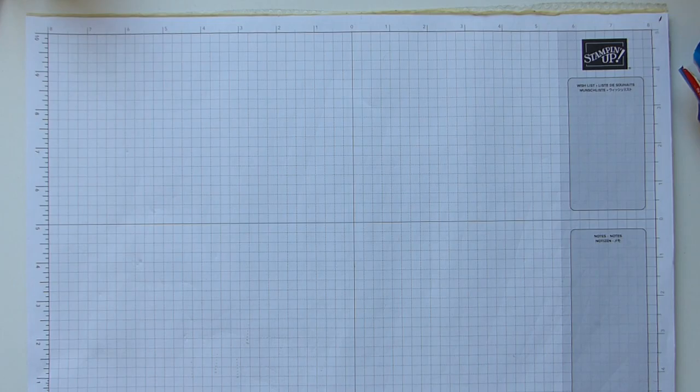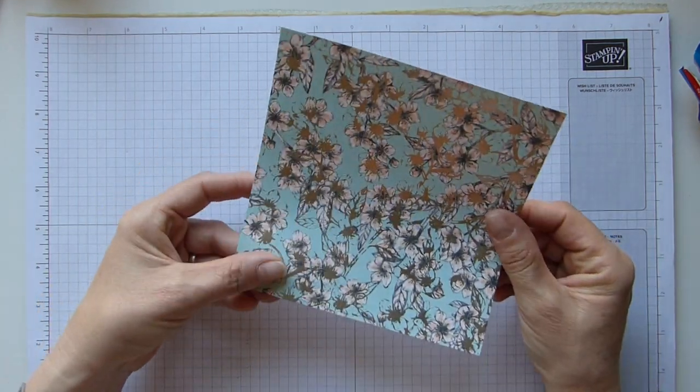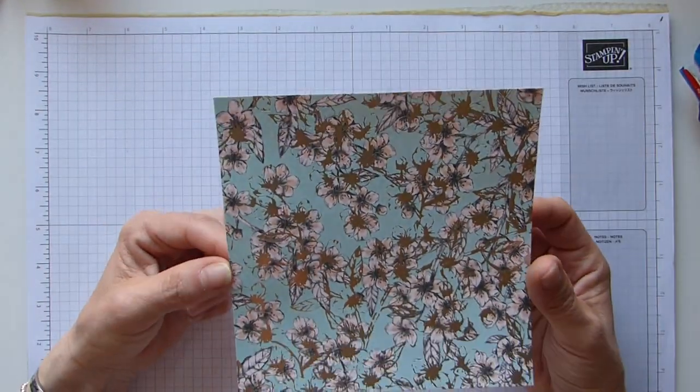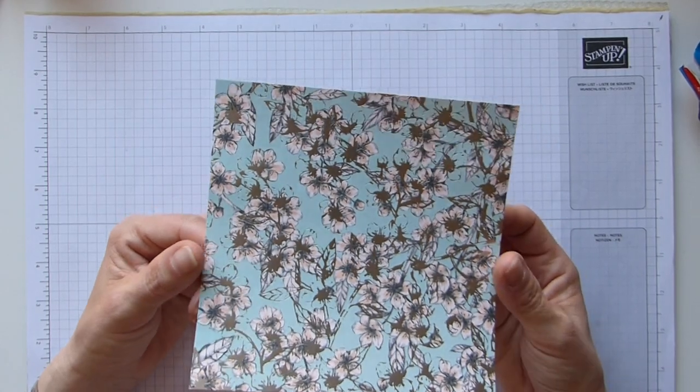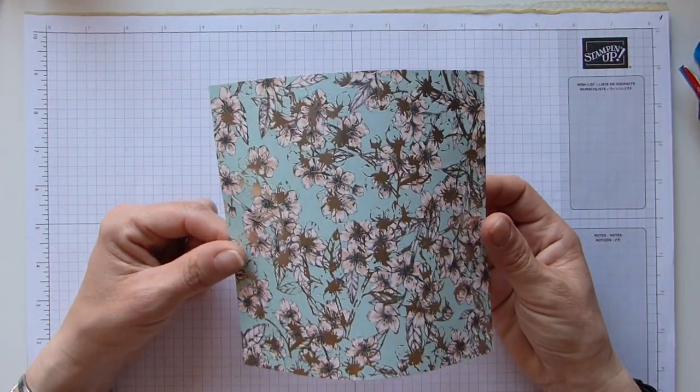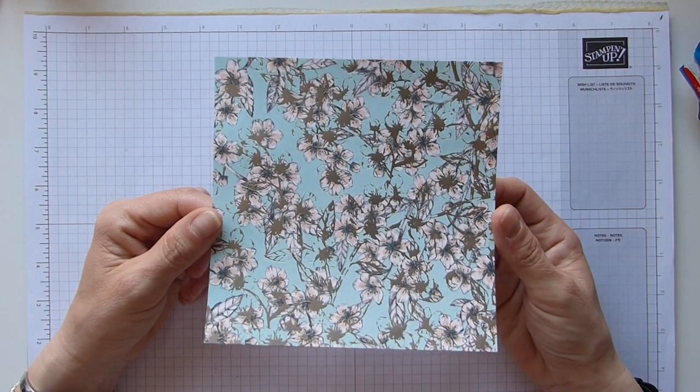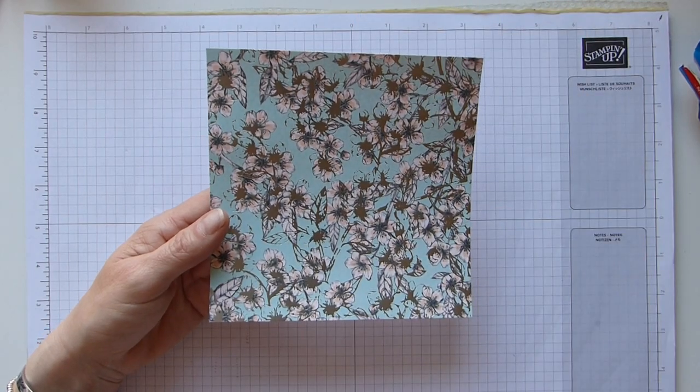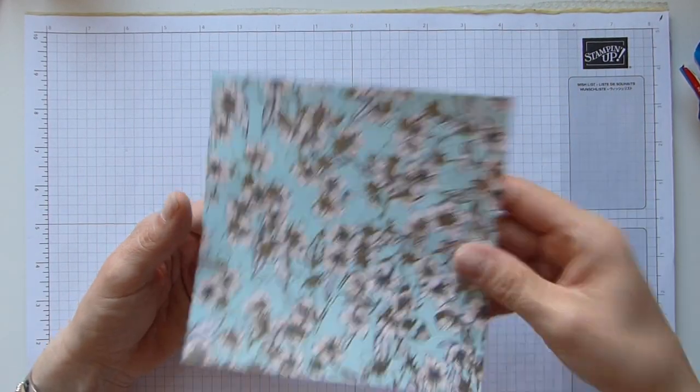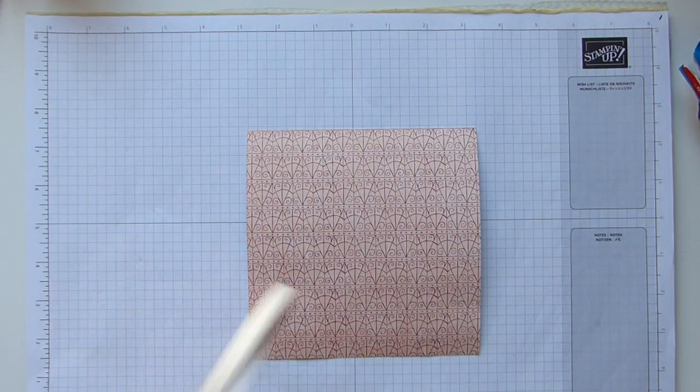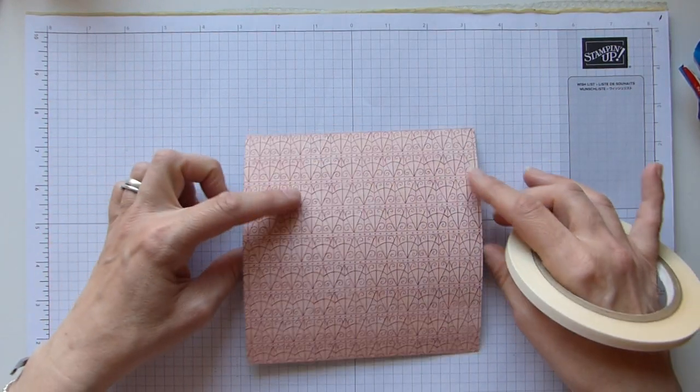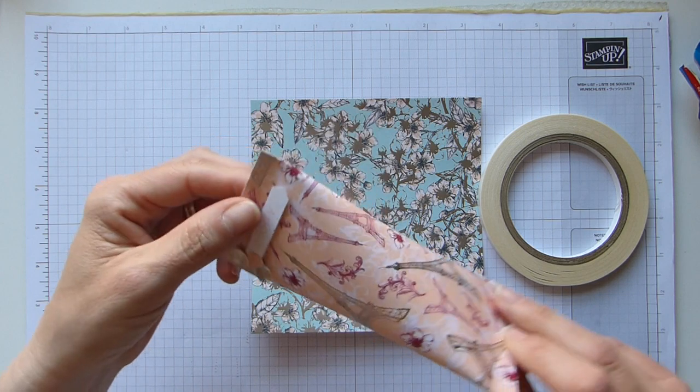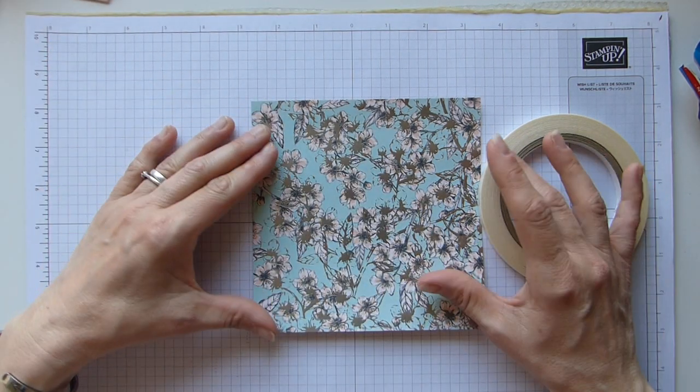To start, you need a sheet of DSP that is six by six. If you're using a standard six by six pack, you could make 48 of these. That's an amazing amount of treats. Our 12 by 12 sheets can be cut into quarters, so you would get four out of a sheet.